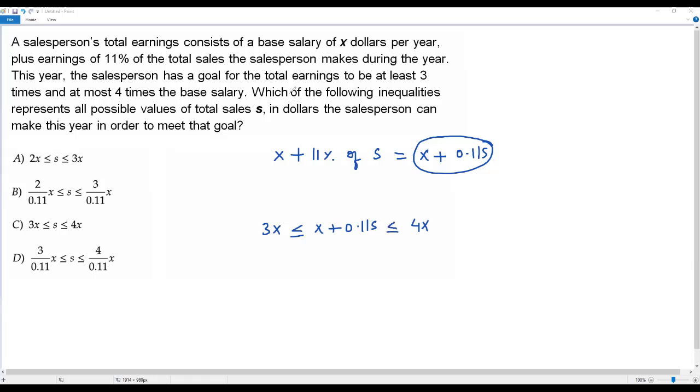According to the question, the total earnings is at least three times the base salary, that means the minimum value. The total earnings is at most four times the base salary, that is the maximum value of 4X.